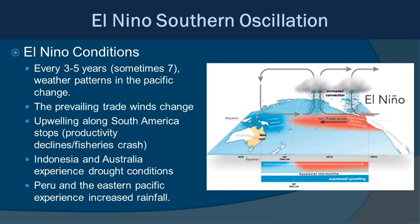Periodically, about every three to five years — sometimes up to seven — weather patterns in the Pacific change. Essentially, the trade winds change, effectively shutting down upwelling along the Pacific coast of South America. This change in wind patterns also stops moisture from reaching Australia and Indonesia, putting them into extreme drought conditions. On the flip side, Peru and the eastern Pacific get a lot more rain, and the productivity along the Pacific South American coastline shuts down, causing a crash of fisheries with both environmental and economic impacts.